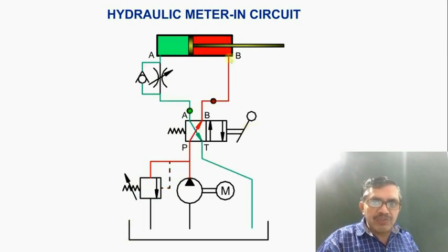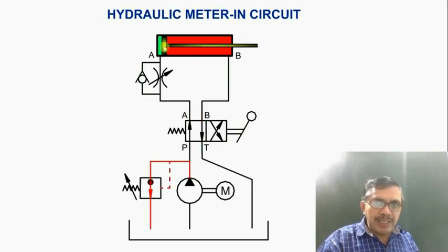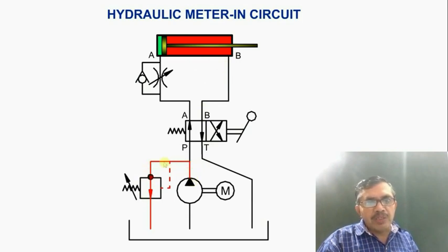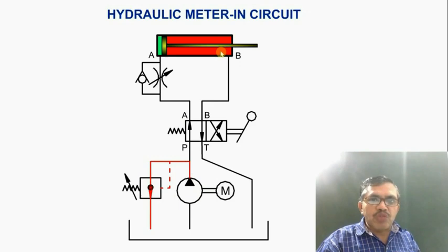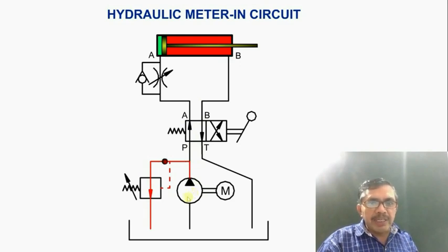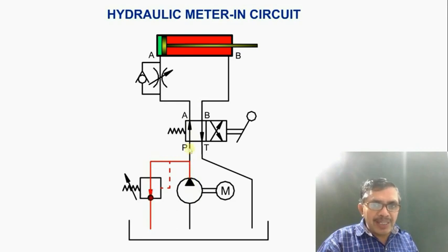In the same way, during retraction, once the retraction completes, oil cannot flow to the cylinder further and the pressure relief valve opens and oil flows back to the tank. If the pressure relief valve is not present, the pump continues pumping oil to a cylinder that has completed its stroke and is full. Since the pump is a positive displacement pump, it keeps pumping and pressure in the system will increase beyond the limit, causing system components to fail. To avoid damage due to high pressure, the pressure relief valve is used to safeguard the system.